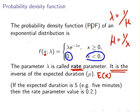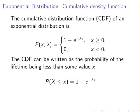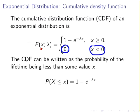Now let's look at the cumulative density function, the CDF. The cumulative density function is given as follows: for some time period X, the probability of a duration less than X is equal to 1 minus e to the power of minus lambda X. For a negative time period the probability is zero.